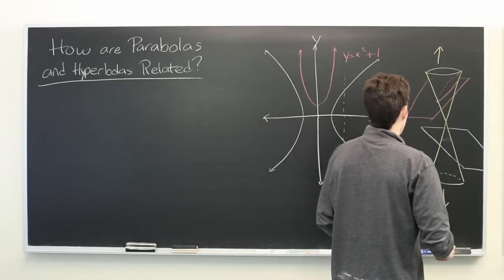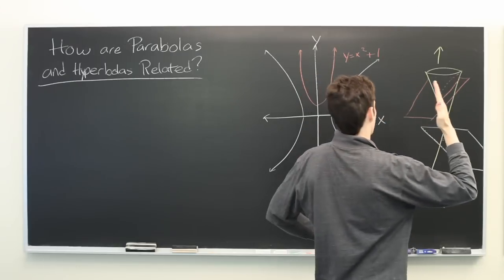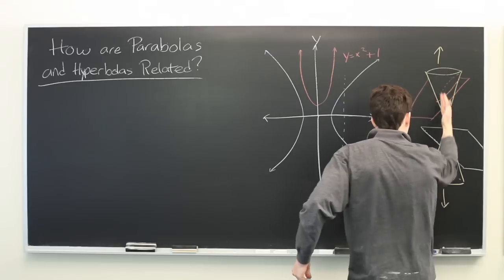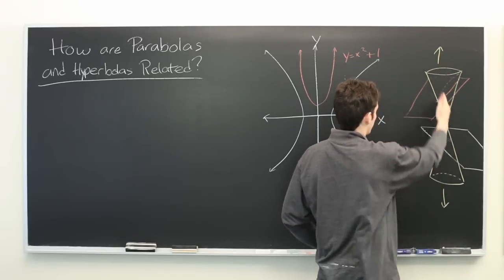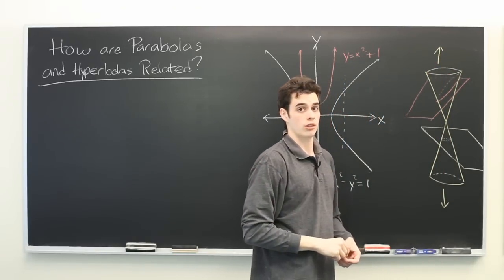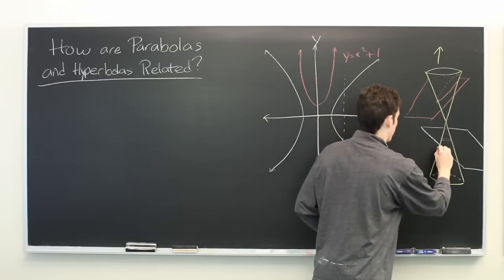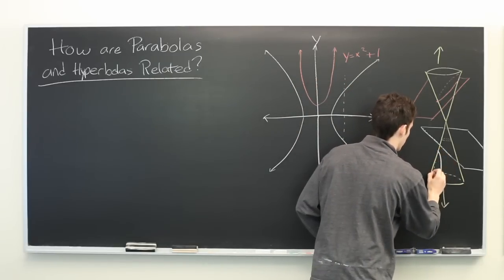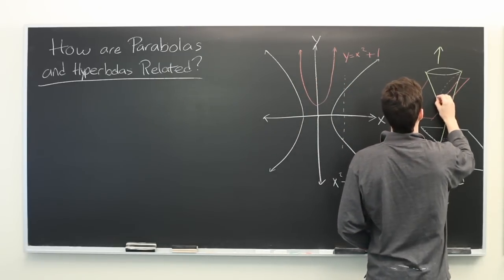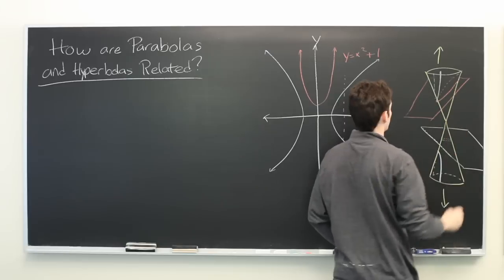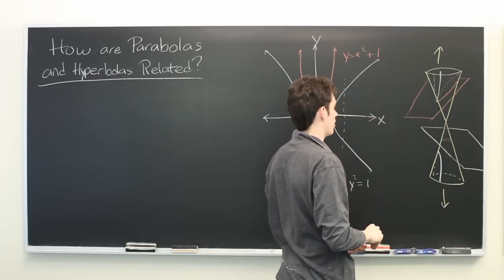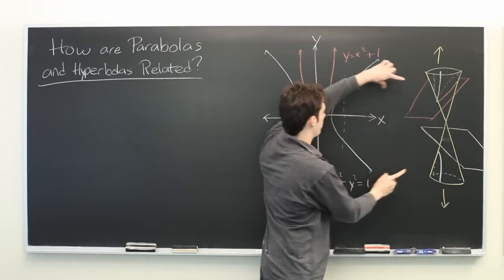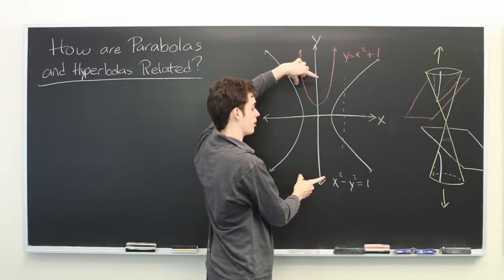And similarly, if we take a vertical plane and chop the cone like this, we will get a conic section that is broken into two pieces. Here and here. Again extending up and down towards infinity. And this will give the hyperbola that we had before.